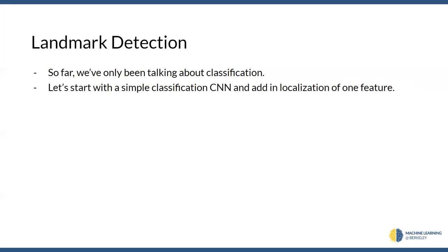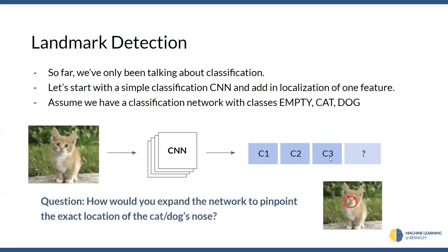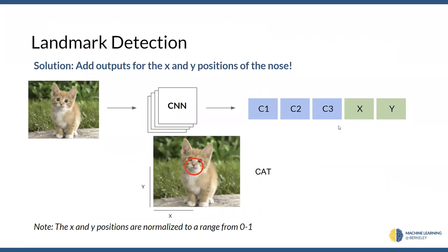Maybe we're looking for the location of a specific feature in an image. Assume you have a classification network that takes in photos of cats, dogs, or something else — maybe a convolutional neural network — and it outputs, using one-hot encoding, three classes: class one is one if it's empty, class two is one if it's a cat, class three is one if it's a dog. How would we expand this network to essentially pinpoint the exact location of the animal's nose? So we want it to output a dot right on the nose in the image. This is kind of halfway to localization — it's just landmark detection.